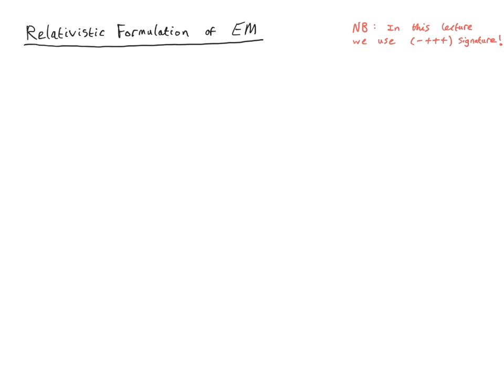Before we get started, in this lecture we're going to use the minus plus plus plus signature — the meaning of that will be explained in due course. Let's review some features of special relativity and in particular the concept of four vectors. I'll summarize in a concise way the technical details without providing full derivations — simply presenting the mathematical machinery behind four vectors, special relativity, Lorentz transformations, contractions, Lorentz scalars and all of this good stuff.